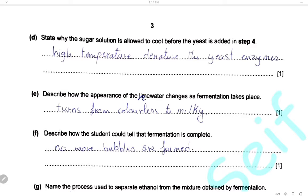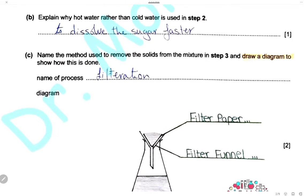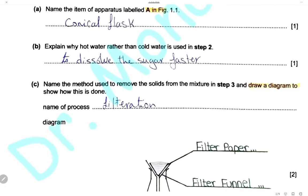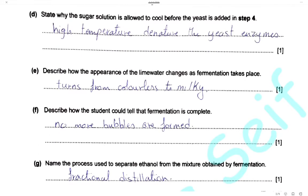Describe how the appearance of the lime water changes as the fermentation takes place. Carbon dioxide gas bubbled through the lime water will change the lime water to turbid or milky. So the color changes from colorless to milky.